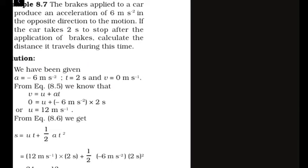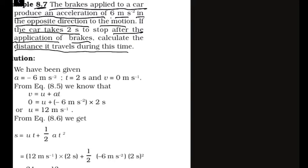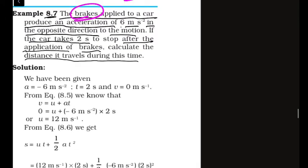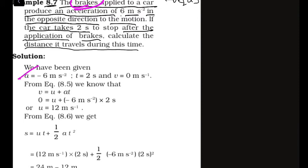Distance covered is 37.5 meters. Coming to question 8.7: The brakes applied to a car produce an acceleration of 6 m/s² in the opposite direction to motion. If the car takes 2 seconds to stop after the application of brakes, calculate the distance traveled during that time.